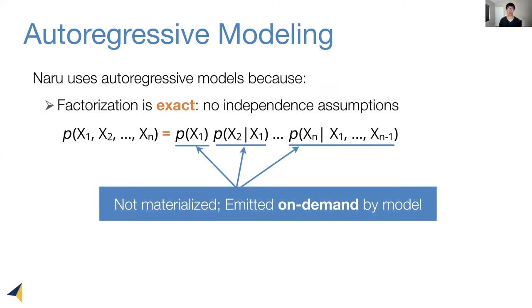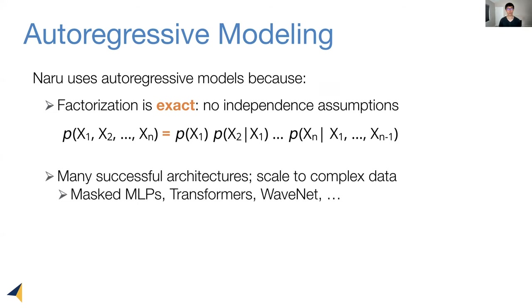To make these conditional outputs tractable, autoregressive models do not explicitly materialize or memorize them. Instead, they are emitted on demand as model outputs. The second compelling reason is that there are many successful architectures in this model family. If we want to scale to more complex datasets, we can pick and choose higher capacity architectures. In this work, Naru utilizes masked multilayer perceptrons and transformers. Both architectures have been successful in non-database tasks.